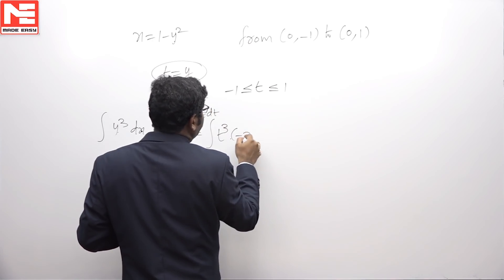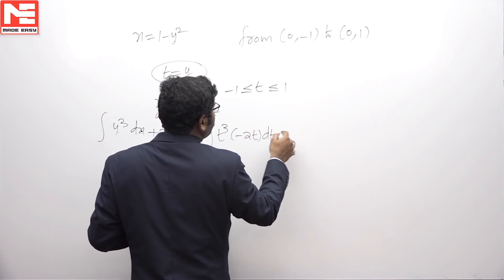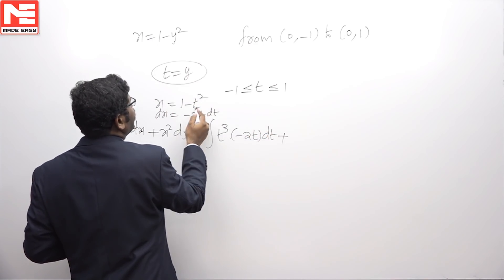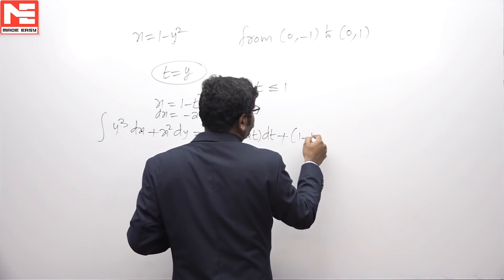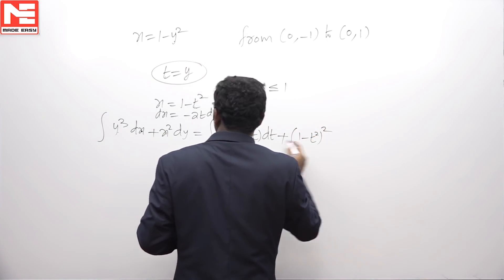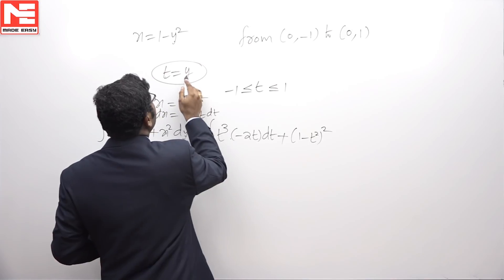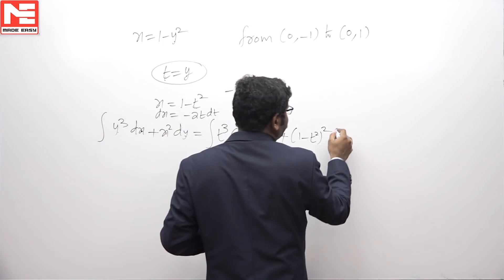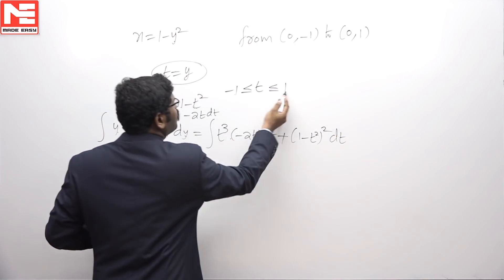So I'm writing -2t dt plus x², which is (1 - t²)² and dy is dt since y is t. t varies from -1 to 1.